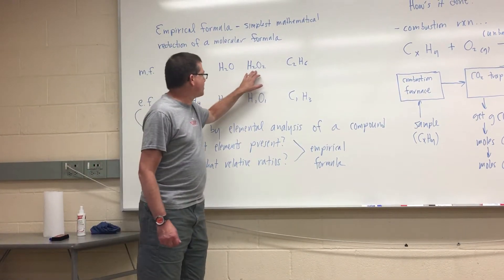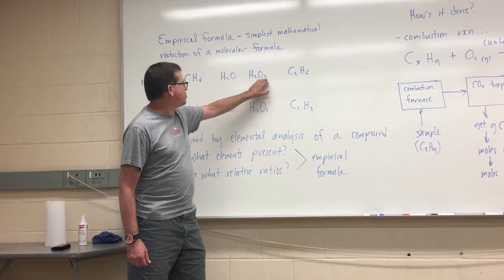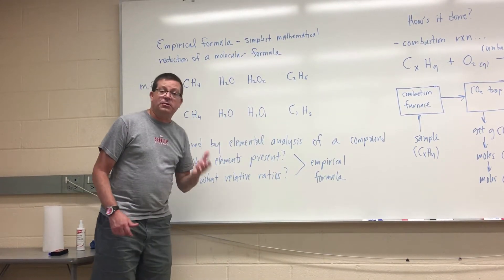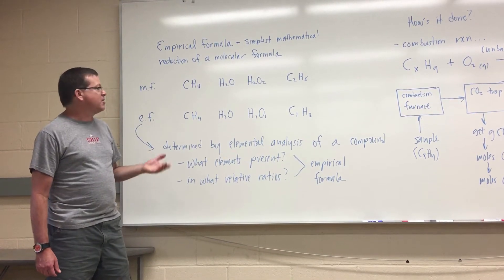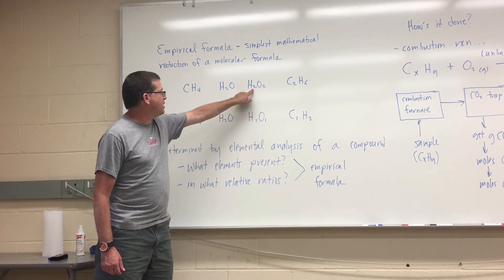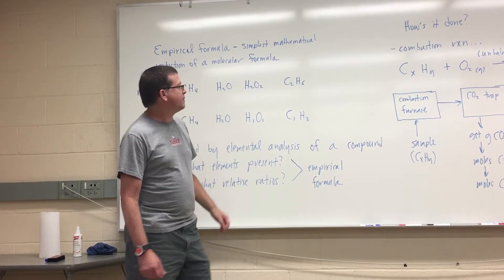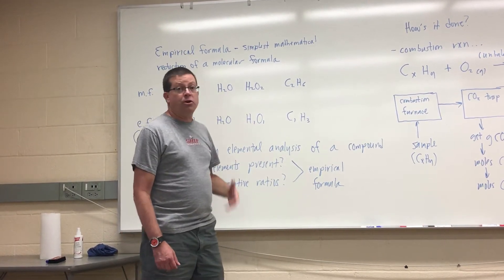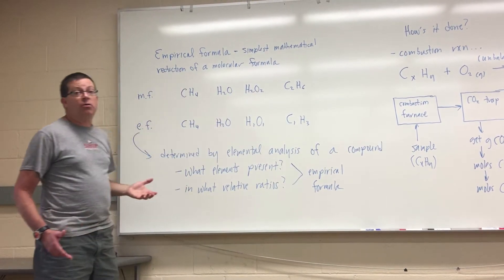We can make the same argument for water — the molecular formula will be the same as the empirical formula. However, for hydrogen peroxide, H₂O₂, you can divide both numbers by two and end up with H₁O₁. So the empirical formula is different from the molecular formula and is the simplest mathematical reduction. Likewise with C₂H₆, dividing both the two and the six by two gives a reduced formula of C₁H₃ — that's our empirical formula.